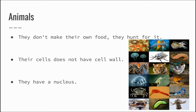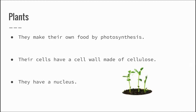Animals do not make their own food — unlike plants, they hunt for it. Their cells do not have a cell wall, but they do have a nucleus. Plants make their own food by photosynthesis.